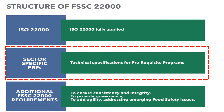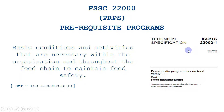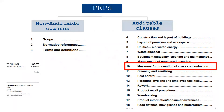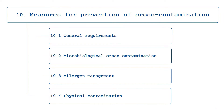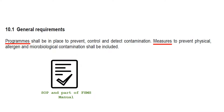We are discussing this video series about PRPs that are part of FSC 22000. This is the definition according to the standard, mentioned here for your reference so you can check it. Let's jump to the main topic — PRP number 10, measures for prevention of cross-contamination. PRP 10 consists of four sub-clauses and we will discuss them one by one. Clause 10.1 is general requirements, and in all PRPs the first sub-clause is always general requirements, which is a summary of the other sub-clauses. I highlighted two words specifically for your attention as they are important from an audit perspective.